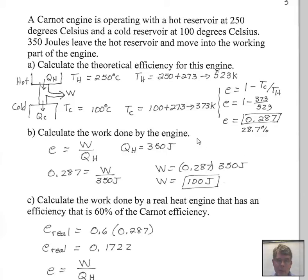Now, the question is, how much work is done by this Carnot engine? Again, we're dealing with an ideal, best possible case engine here with these temperatures given. Well, we have the efficiency, and the efficiency is work over Q_H. We were told that 350 joules of energy leave the hot reservoir. So we were given Q_H.